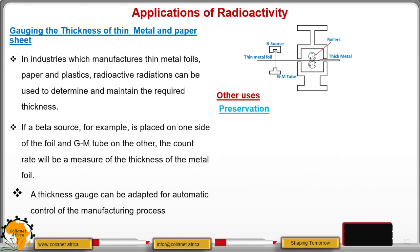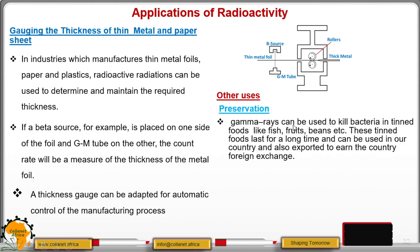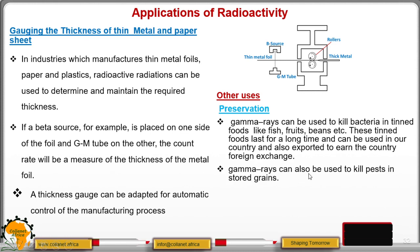Other uses include preservation. Gamma rays can be used to kill bacteria in tinned or canned food, preserving it so it can last for a longer time. Gamma rays can also be used to kill pests in stored grains, which is also a form of preservation.